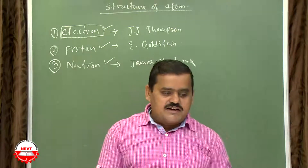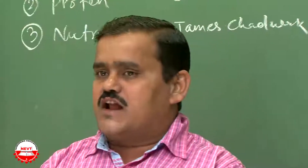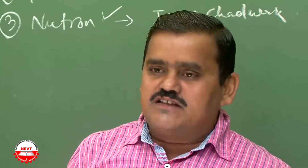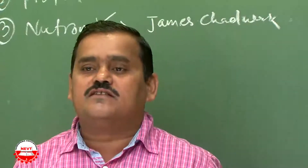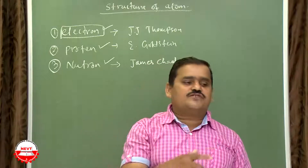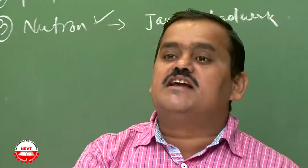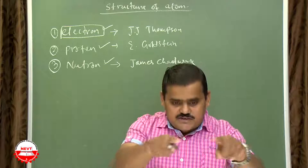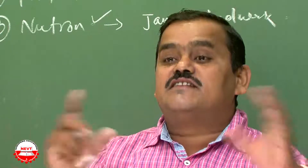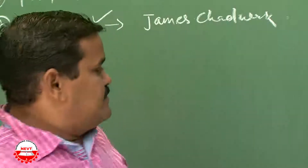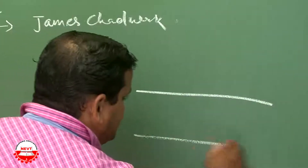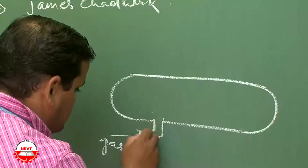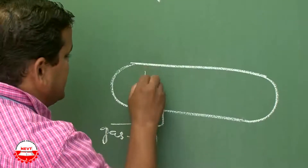We have to study the cathode ray tube, that means the discharge tube. One concept is work function — if you apply high voltage to any substance it starts emitting electrons. This gives scintillation. If you perform this experiment in a discharge tube, that means in a tube made into vacuum, a gas ejector or compressor is used.